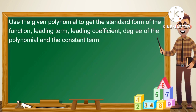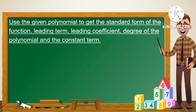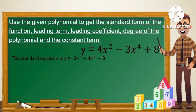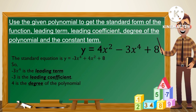Use the given polynomial to get the standard form of the function, leading term, leading coefficient, degree of the polynomial, and the constant term. Given: y is equal to 4x squared minus 3x to the 4th power plus 8. To get the standard form, we arrange the terms in decreasing power of x. So the standard form is y is equal to negative 3x to the 4th power plus 4x squared plus 8. The leading term is negative 3x to the 4th power, the leading coefficient is negative 3, the degree is 4, and the constant term is 8.